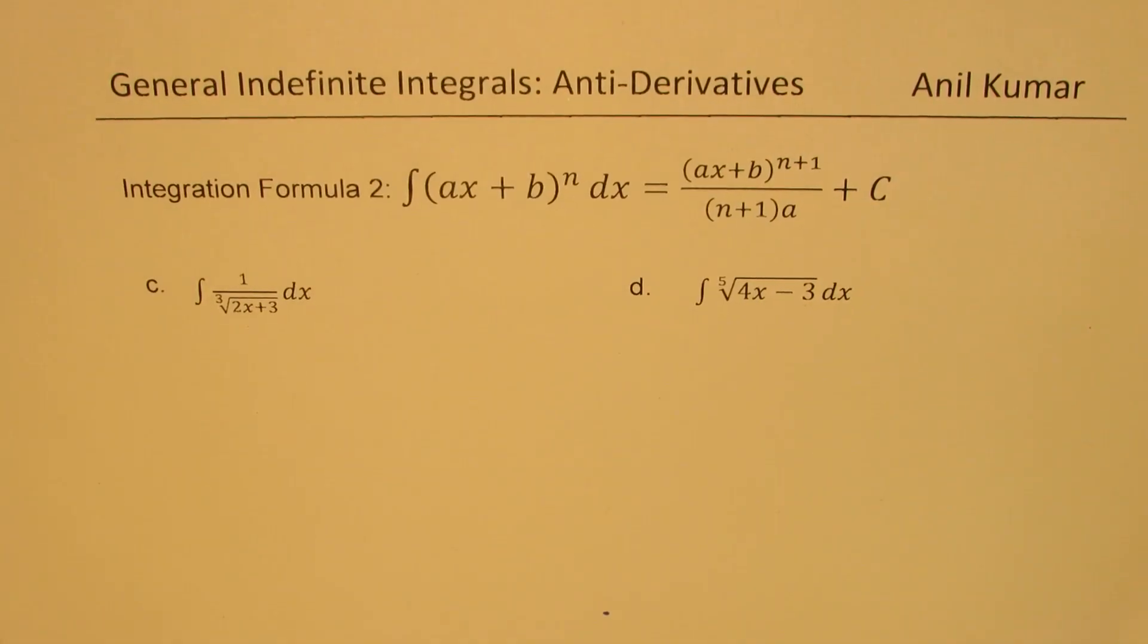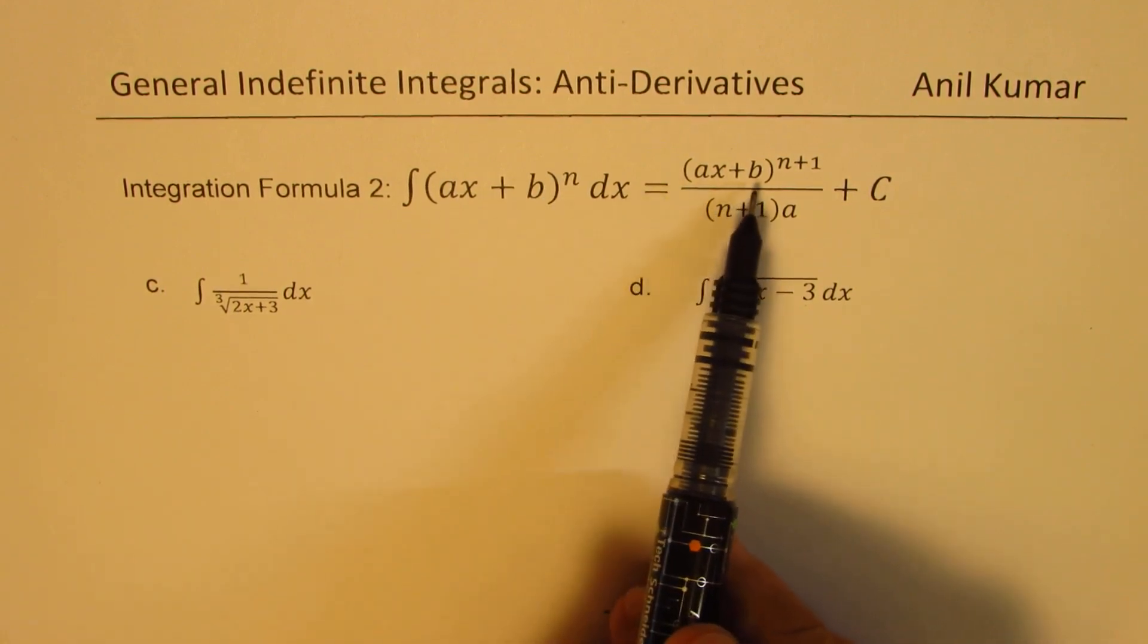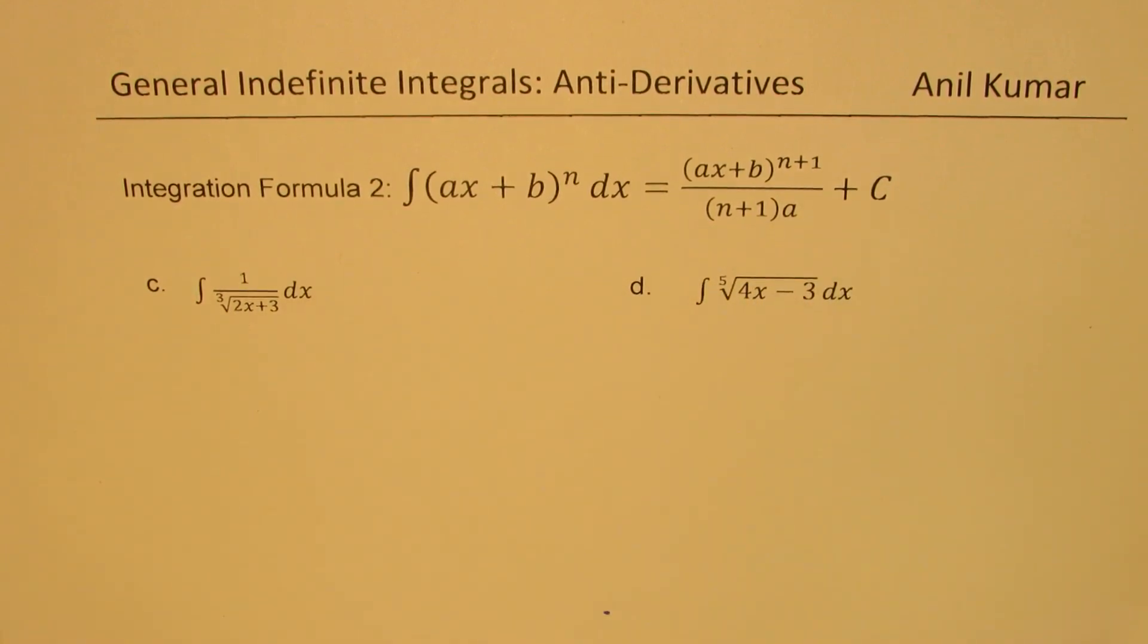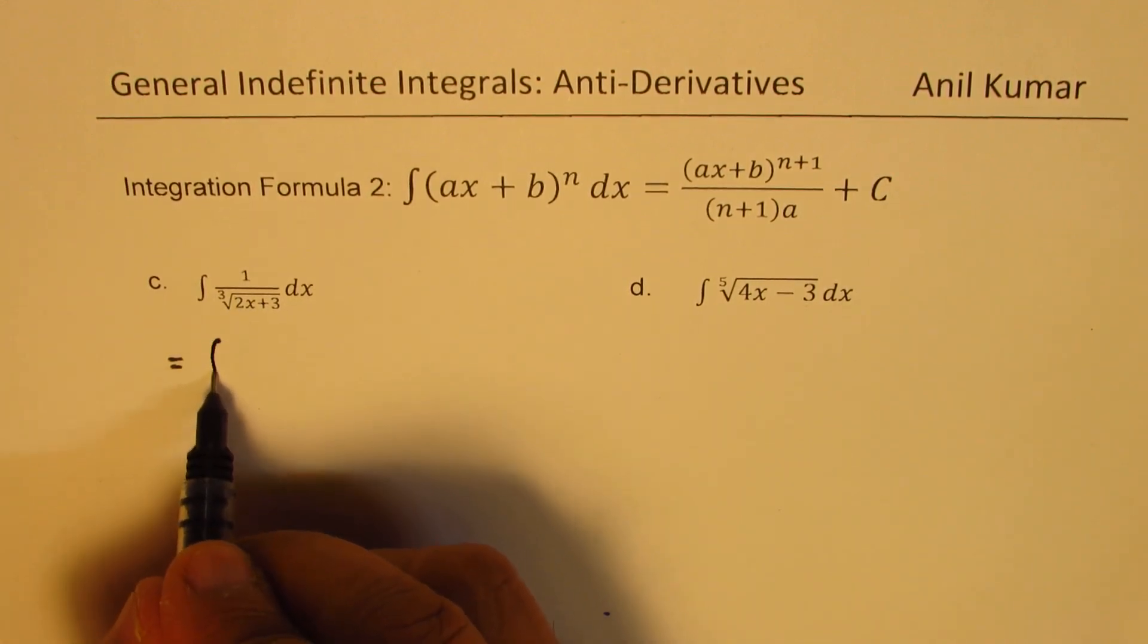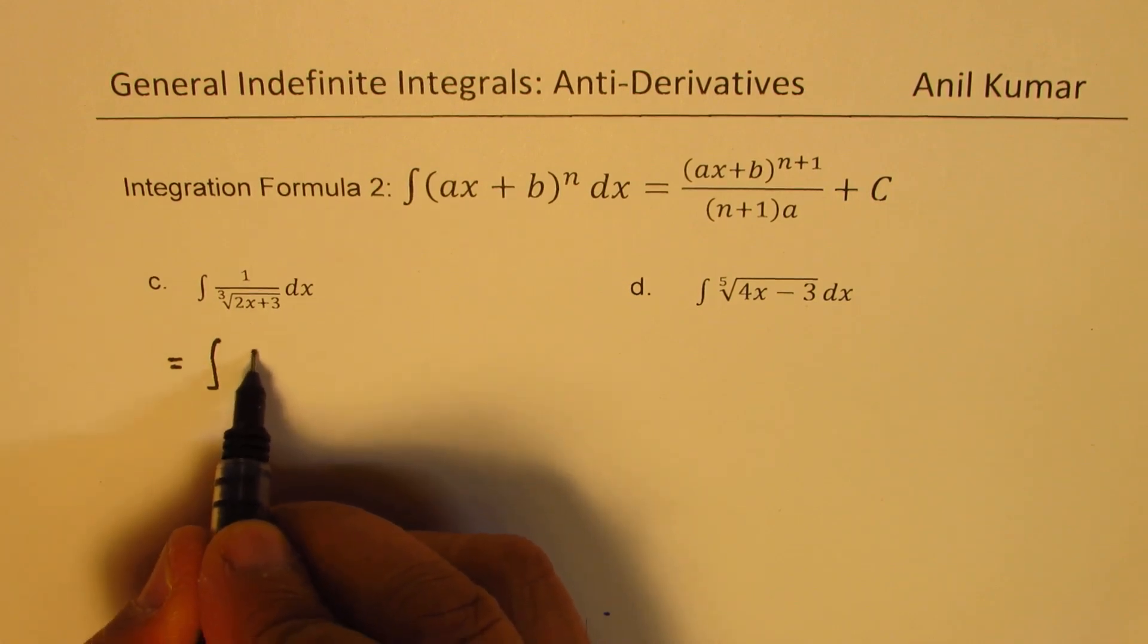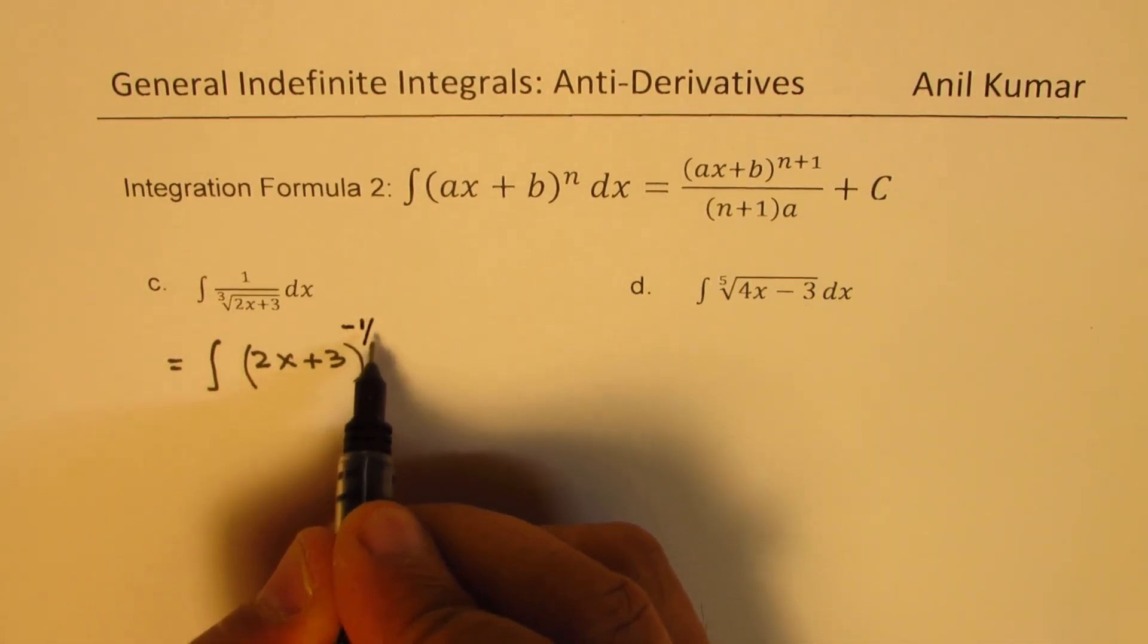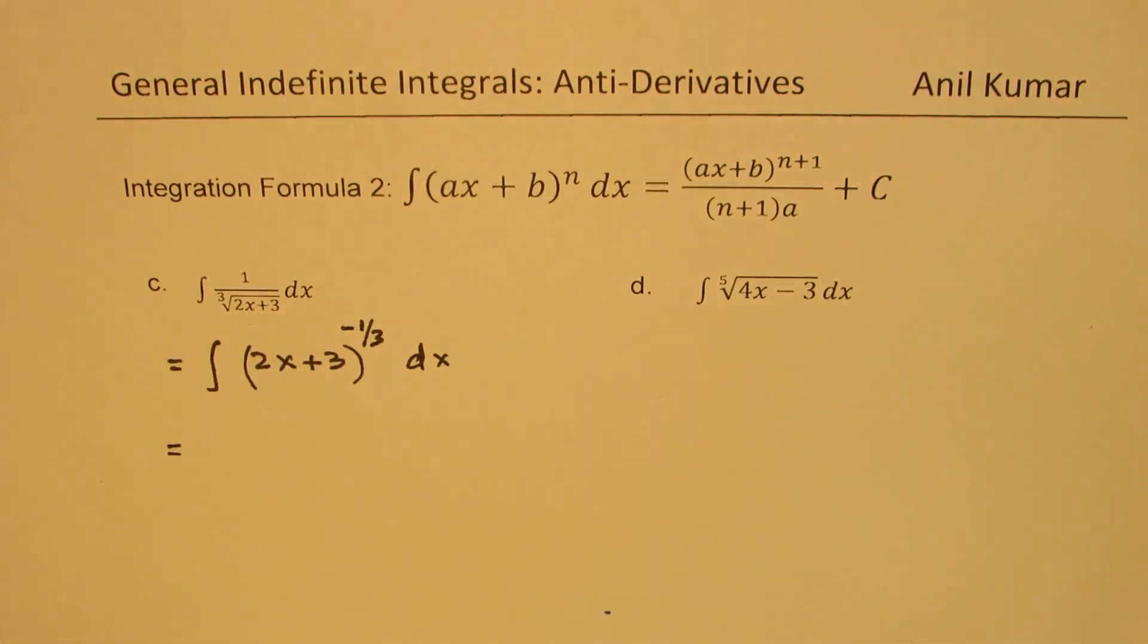Here are parts C and D. For integration, we are using formula 2, which is integral of ax plus b to the power of n dx equals ax plus b to the power of n plus 1 divided by n plus 1 times a plus C. We could write this as integral of 2x plus 3 to the power of, when it is in the denominator, minus 1 over 3. Now it is in our form, and we can apply our integration formula number 2.